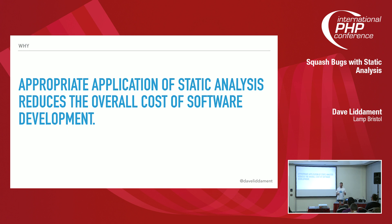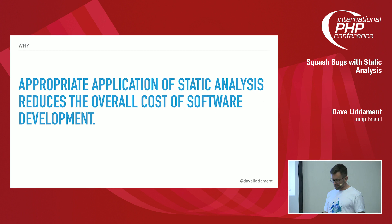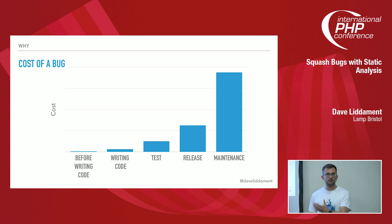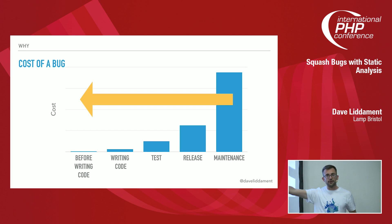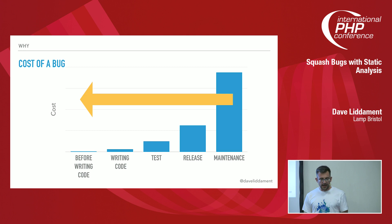The way static analysis can help reduce the cost of overall software development is this: if we imagine how much a bug costs, generally the later we find it, the higher the cost of fixing it. So what we really want to do is take expensive bugs at the maintenance level and push them all the way down, potentially not even introducing them into our code base in the first place. If we can do that, we reduce cost — and we're going to see how static analysis can help.